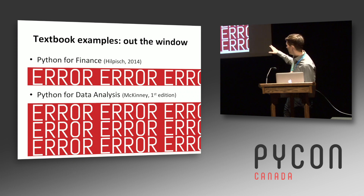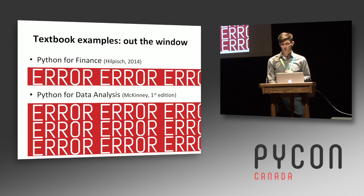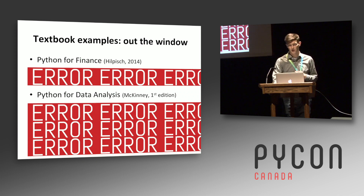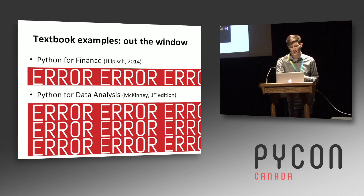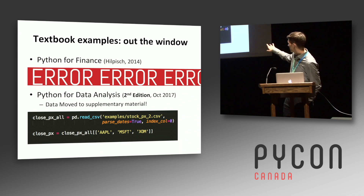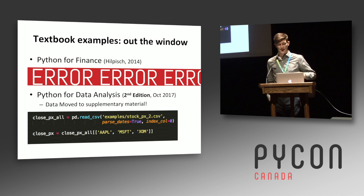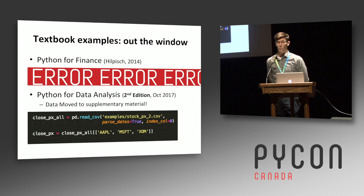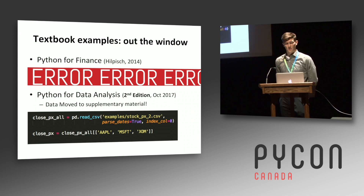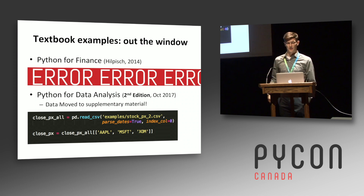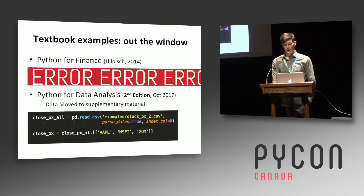Some of you might know that Python for Data Analysis put out a second edition back in October. The way they addressed this issue — I guess they were pretty bearish on the return of Yahoo Finance — they moved the data to a supplementary CSV file. They just hard-coded in the CSV and shipped that as their workaround for the now broken example. That works, but I think there's a loss of what you're teaching people in terms of how to dynamically gather data and interact with an API.